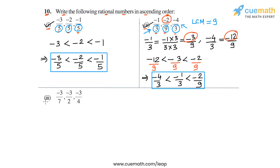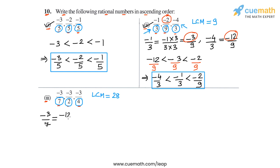Now let's come to part 3, in which we have to arrange minus 3 by 7, minus 3 by 2, and minus 3 by 4 in ascending order. The denominators are 7, 2, and 4, and the LCM of these three numbers is 28. We will write each of these rational numbers as equivalent rational numbers with denominator 28. Minus 3 by 7, multiplied above and below by 4, gives us minus 12 by 28.